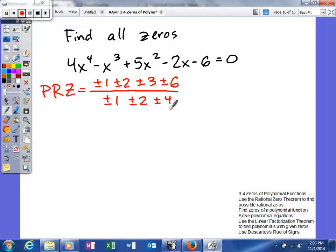Now that's going to end up with basically a lot of different things. You're going to have 1, 2, 3, 6, and then you're going to have 1 half, 3 halves, and then you're going to have 1 fourth, 3 fourths. So I'll go ahead and write those down. So plus or minus 1, plus or minus 2, plus or minus 3, plus or minus 6.